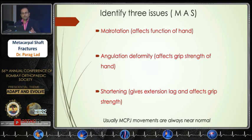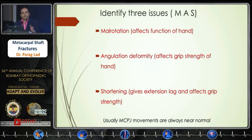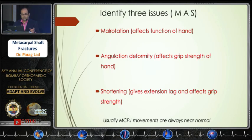As per the literature, if there is a shortening of 20 degrees, there is a 7-degree extension lag in metacarpal shaft fractures. These are the three issues — whenever we see any shaft fracture of the metacarpal, one should analyze as per MAS: malrotation, angulation, and shortening.